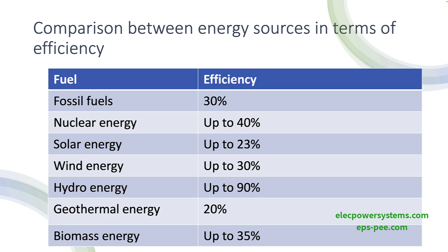Fossil fuels are a non-renewable energy source that includes coal, oil, and natural gas. The efficiency of fossil fuels depends on the technology used in the extraction, transportation, and use of these fuels. Generally, fossil fuels are considered to have low efficiency because a significant portion of the energy is lost during the extraction, transportation, and conversion processes. For example, in coal-fired power plants, only about 30 percent of the energy from coal is converted into electricity.